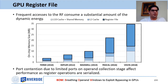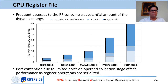Here in this figure, you can see the size of register file units versus other on-chip storages over different generations of NVIDIA GPUs. For example, NVIDIA Volta GPUs have 20 megabytes of register file across the whole chip.